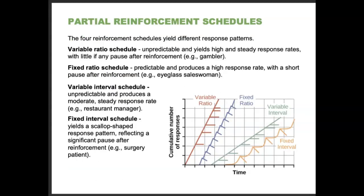Looking at the differences between these four schedules: the variable ratio schedule is unpredictable and yields high and steady response rates with little pause after reinforcement — think the gambler. The fixed ratio schedule is predictable and produces a high response rate with a short pause after reinforcement — think a salesperson rewarded on a fixed schedule. The variable interval schedule is unpredictable and produces a moderate, steady response rate — think restaurant manager. The fixed interval schedule yields a scallop-shaped response pattern and reflects a significant pause after reinforcement — think surgery patient.